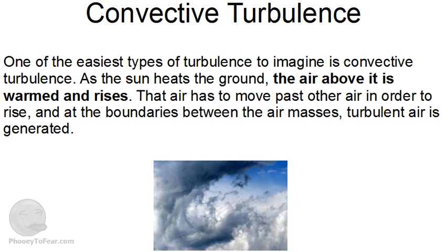One of the easiest types of turbulence to imagine is convective turbulence. As the sun heats the ground, the air above it is warmed and rises. That air has to move past other air in order to rise, and at the boundaries between the air masses, turbulent air is created. Normally such movements of air are not rapid and don't give rise to much turbulence. However, the rising air can also meet weather fronts moving horizontally across the land, and at the point at which the rising air tries to push through the air moving across it, significant turbulence can be generated.